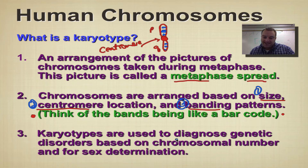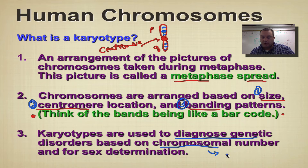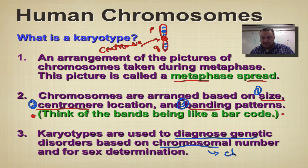We can use a karyotype to diagnose a genetic condition based upon chromosome numbers, or if something's missing or something's been added to a chromosome — basically, changes in the chromosome. We're also going to be able to use a karyotype for sex determination, because you can actually see the X chromosome and the Y chromosome, which are the sex chromosomes.